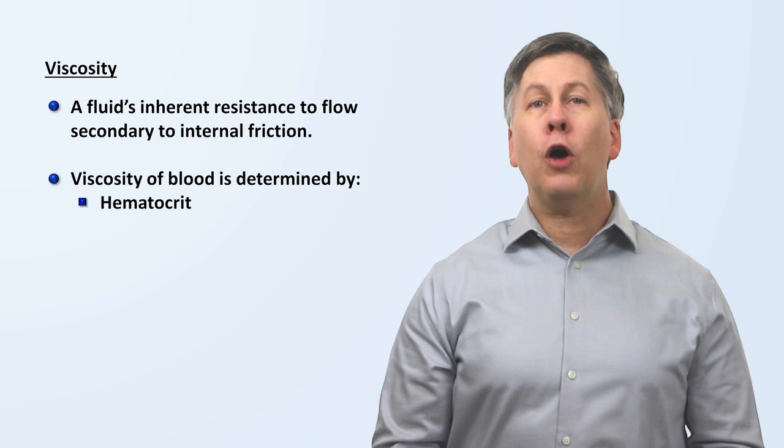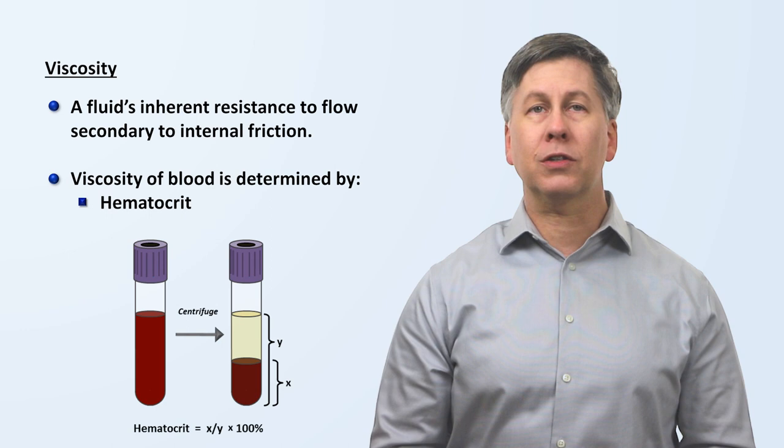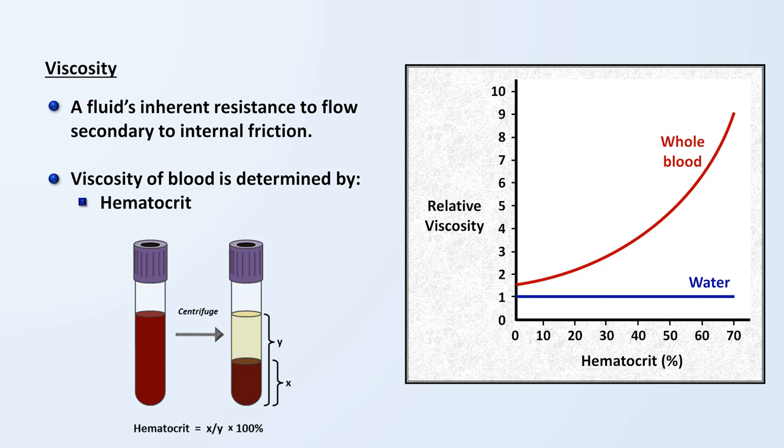The most important of these is the hematocrit. The hematocrit is a measure of what percentage of the blood by volume is taken up by red blood cells. If we graph the relative viscosity of whole blood as a function of the hematocrit, where water is our reference, we can see that not only does increasing hematocrit lead to increased viscosity, the relationship is not linear. Viscosity begins to sharply rise once the hematocrit is above the normal range, a condition known generally as polycythemia.